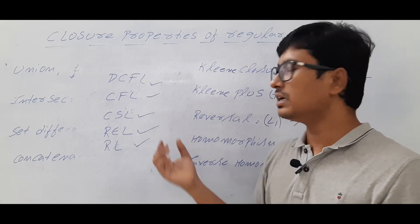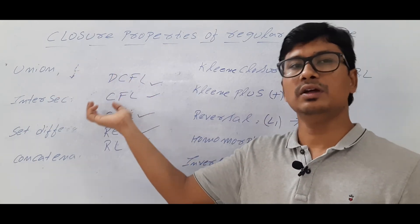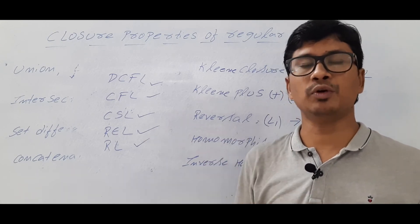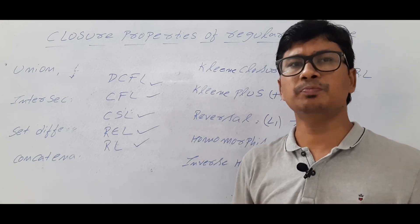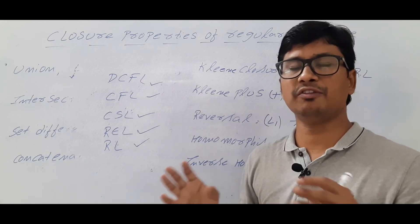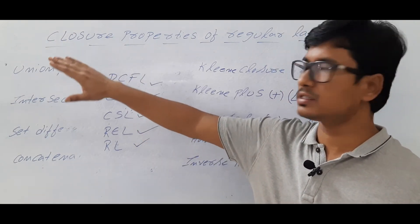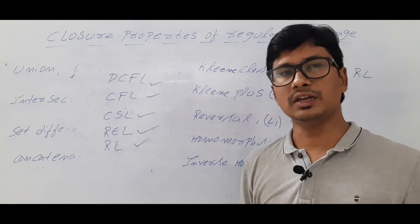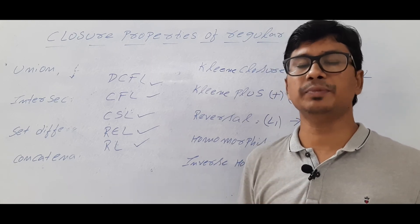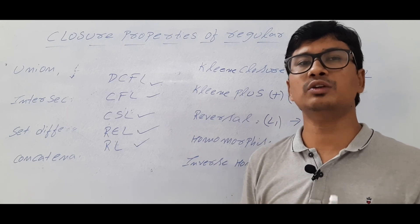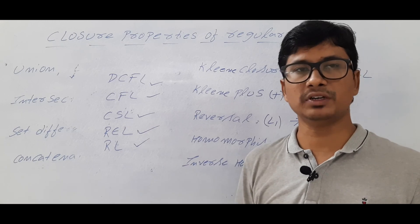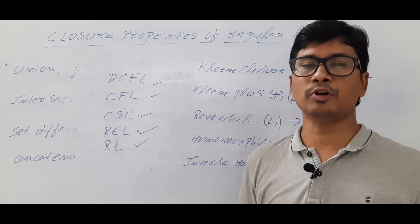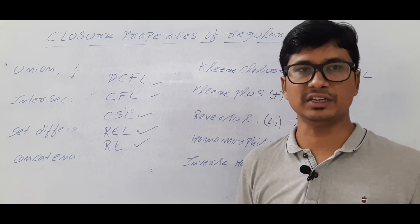Instead of discussing all of them — since you just have to remember them — it would be a waste of time for me to just list union, intersection, and so on. So I am providing a PDF in the description section. Please download it. In the PDF you will find a table with the properties for regular languages, context-free languages, context-sensitive languages, recursive enumerable languages, and recursive languages. Every year at least one or two marks are asked, directly or indirectly, on the properties of languages, especially for GATE or any competitive exams.